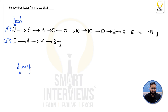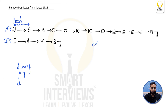We denote this dummy node by variable d — it's an empty node with random data, and its next is linked to null. Starting our iteration from the beginning, we see that 2 is repeated only once so its count is 1. Since the count is 1, we link the dummy node to node 2: d.next = node 2. Then we move d forward and set d.next to null, since we don't know how many more nodes will come.